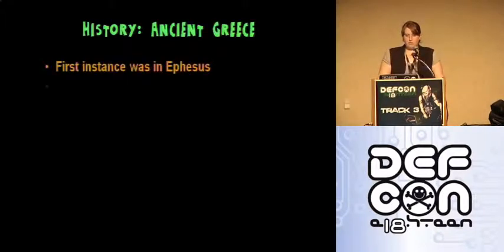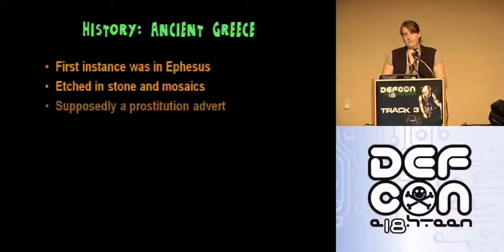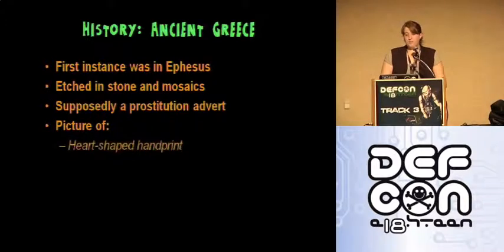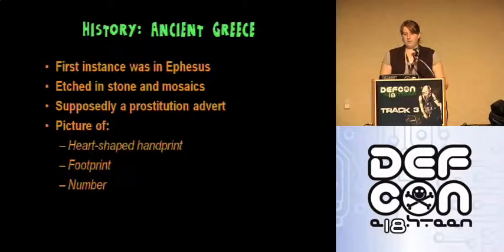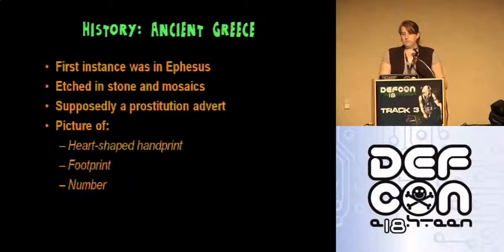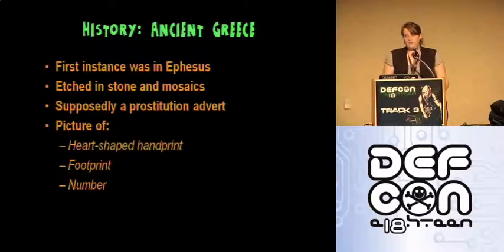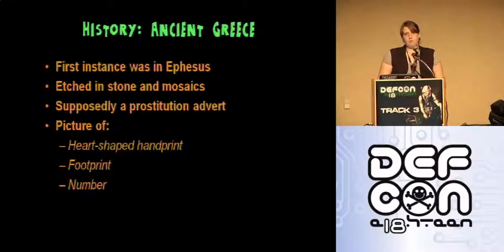Although it's debatable whether the cave drawings are examples of early graffiti, we can definitely say that it was popular in ancient Greece. The first known example of Grecian graffiti is viewable in the ancient city of Ephesus, which is in present-day Turkey. The first graffiti drawing was evidently an advertisement for prostitution, etched into stone near mosaics and walkways. The image itself was of a heart-shaped handprint, a footprint, and a number.